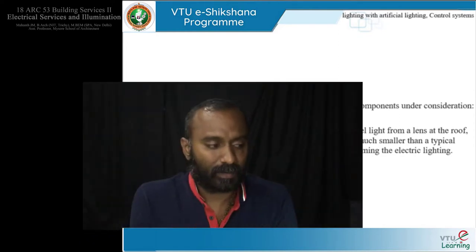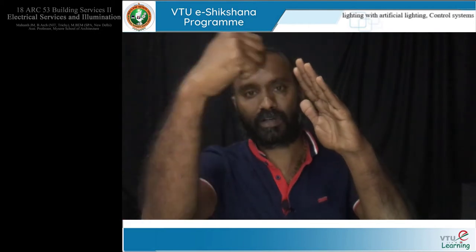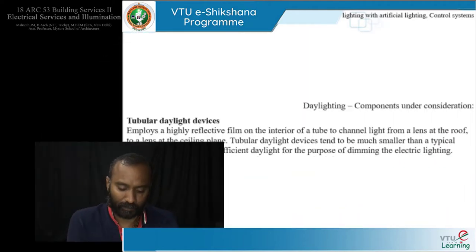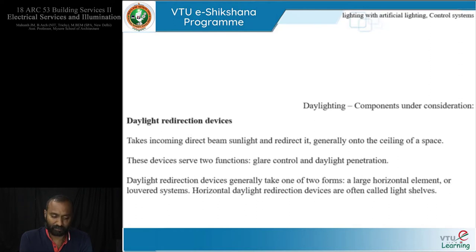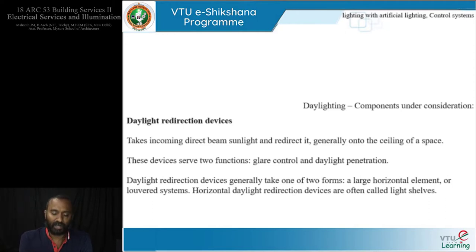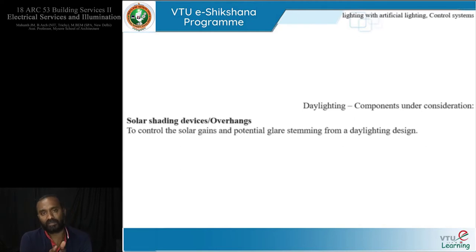One example I would remind you of is the periscope — you have one mirror here, another mirror there, and you borrow something through reflection. It still works in cameras; most DSLRs work based on this concept. Tubular daylight devices are similar to that. Daylight redirection devices take incoming direct beam sunlight and redirect it generally onto the ceiling space. These devices usually serve two functions: glare control and daylight penetration. They can take two forms: a large horizontal element or louver system. Horizontal daylight redirection devices are often called light shelves.